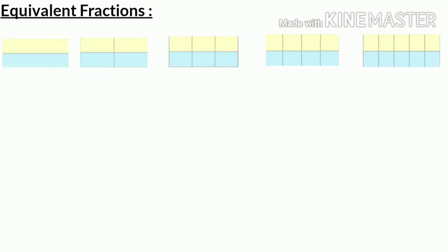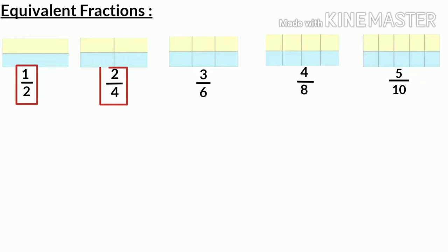Now let's start the discussion about equivalent fractions. Look at these rectangles — all are of the same size, but each rectangle has been divided into a different number of parts. The fractions for the shaded region of each rectangle are as follows: one half of the rectangle is yellow, two fourths of the rectangle is yellow, three sixths of the rectangle is yellow, four eighths of the rectangle is yellow, and five tenths of the rectangle is yellow.